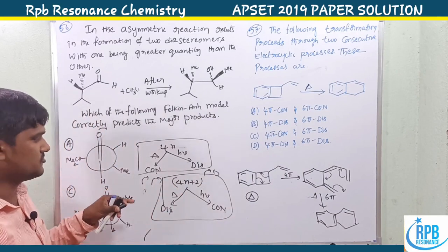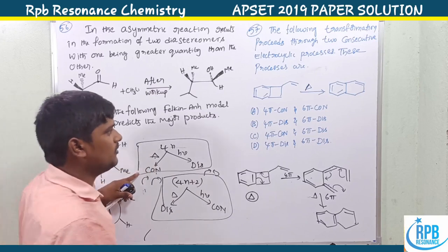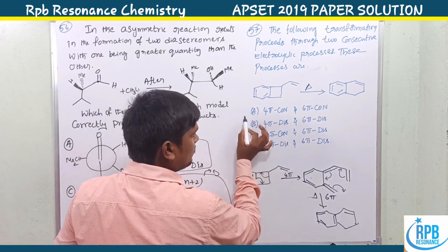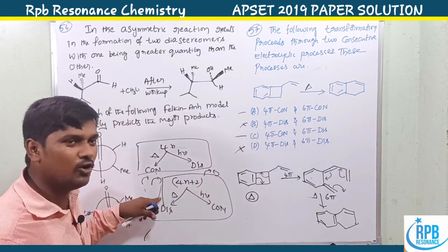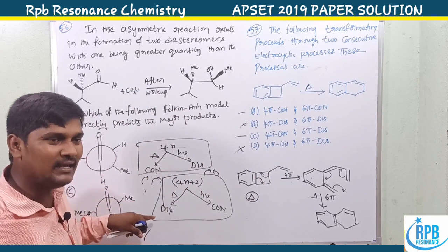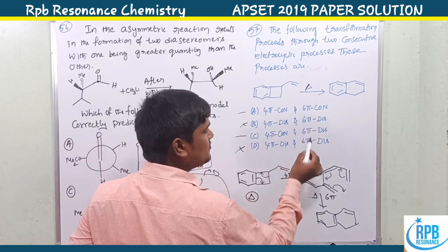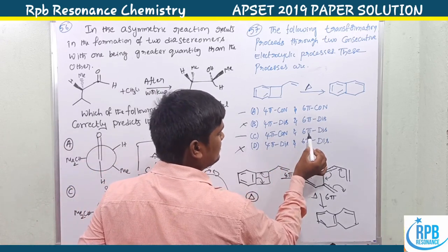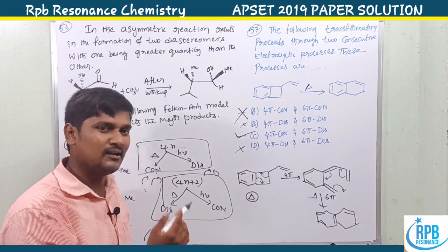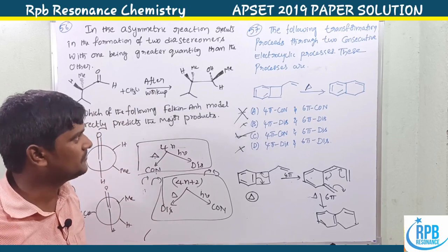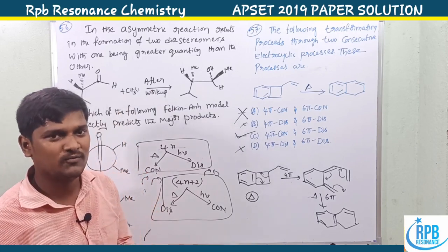So for 4n+2 system thermally: disrotatory is allowed. Option A says 4n+2 thermally disrotatory — that would be correct. Option C says 4n+2 thermally conrotatory — that is wrong. So options A and C: B and D are wrong. For 4n+2 thermally, disrotatory is allowed — option C is wrong, option A is the character. This completes the video on pericyclic reactions.